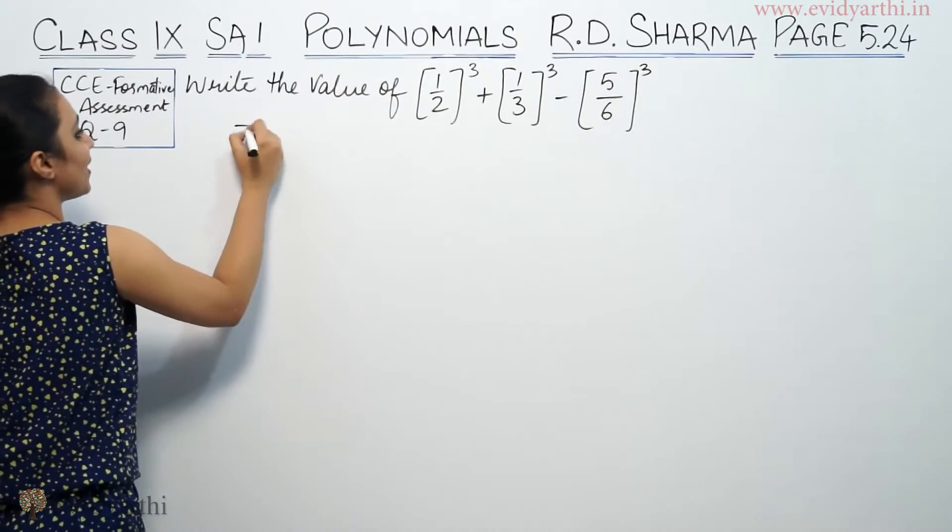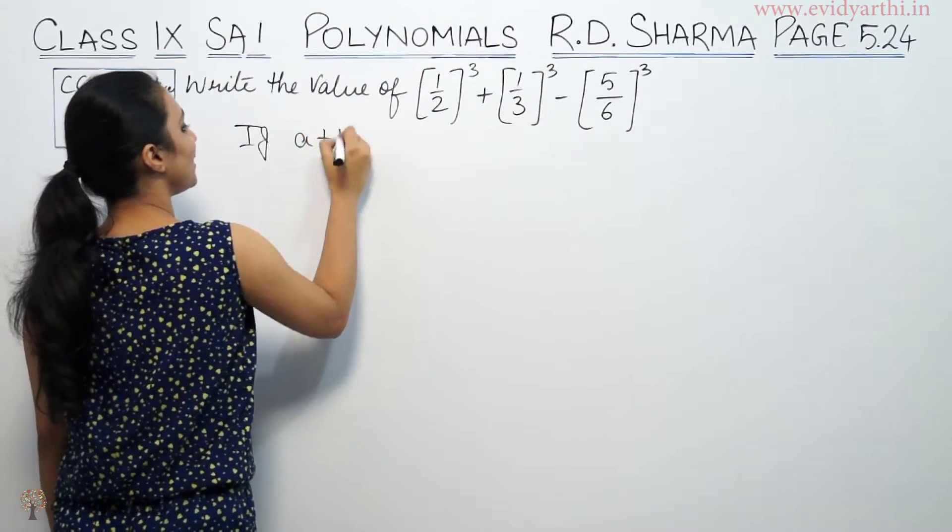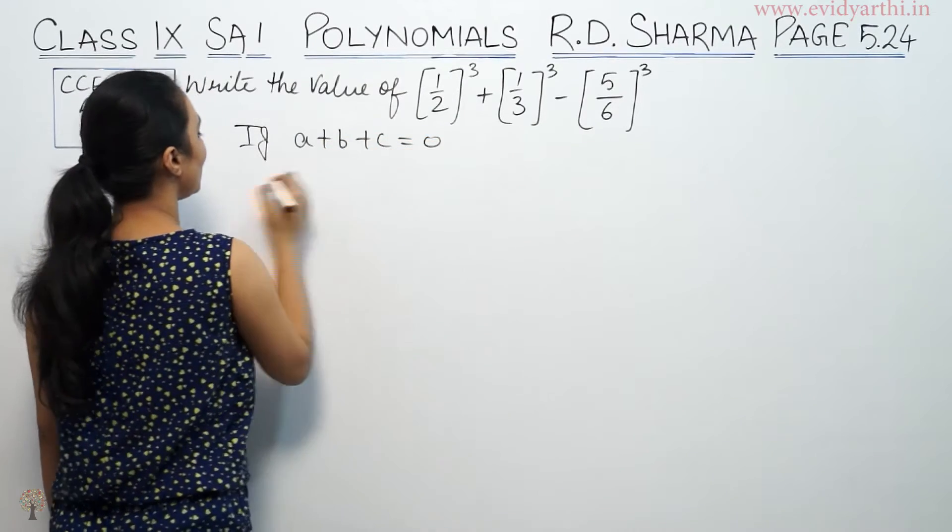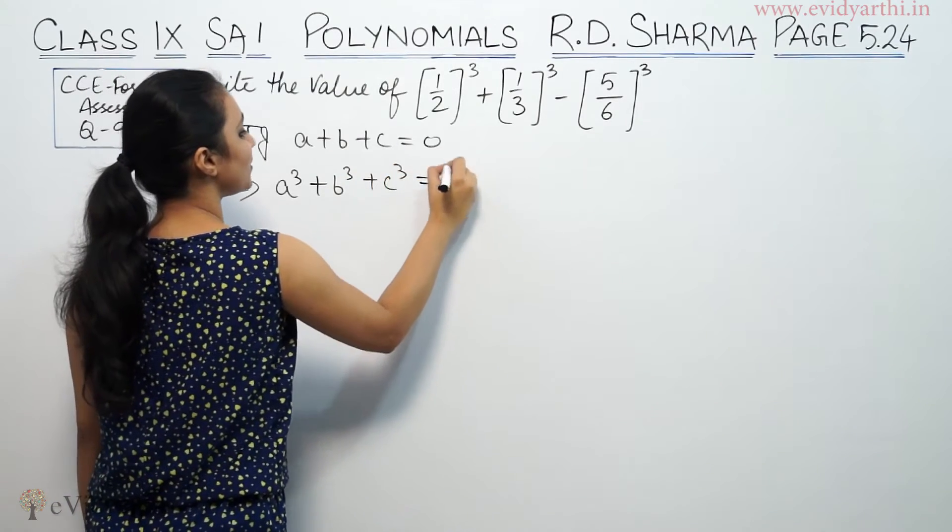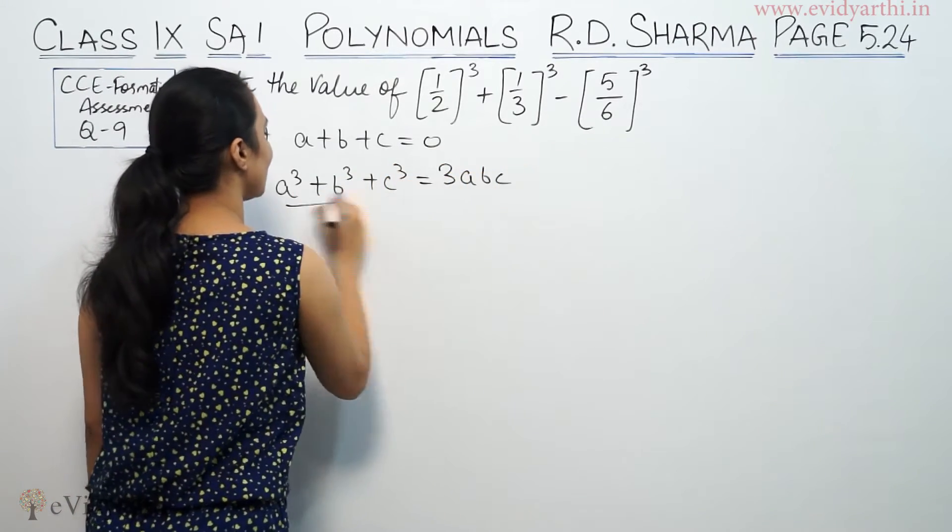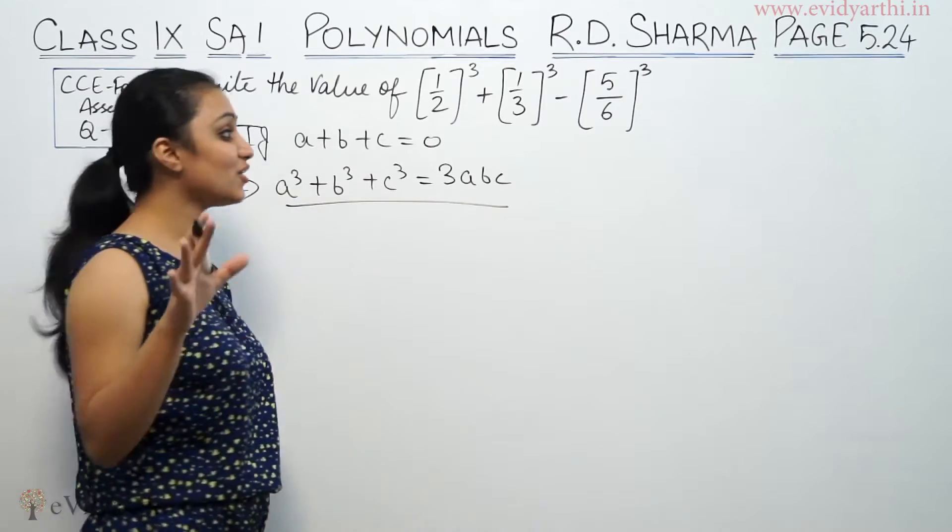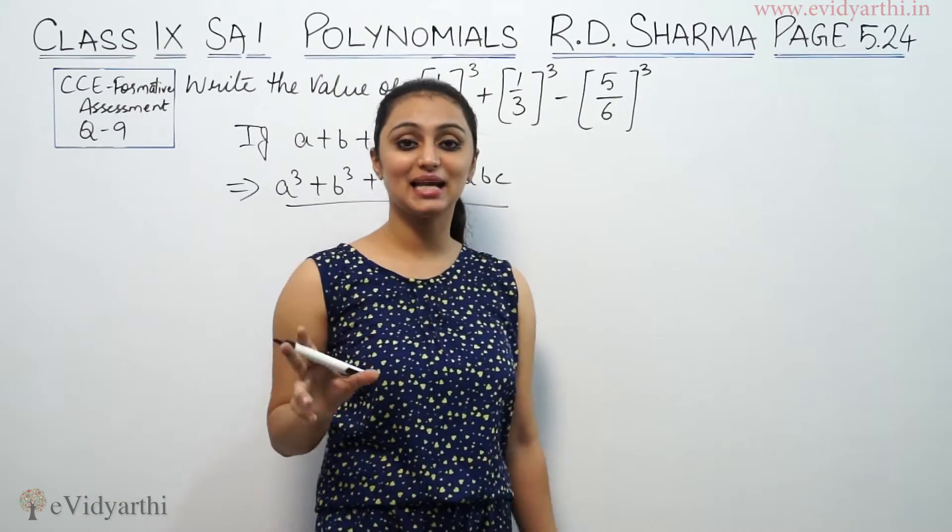So basically, we know that if a + b + c = 0, this implies a³ + b³ + c³ = 3abc. This is an identity. If you see your NCERT book, that is the last identity that is mentioned.